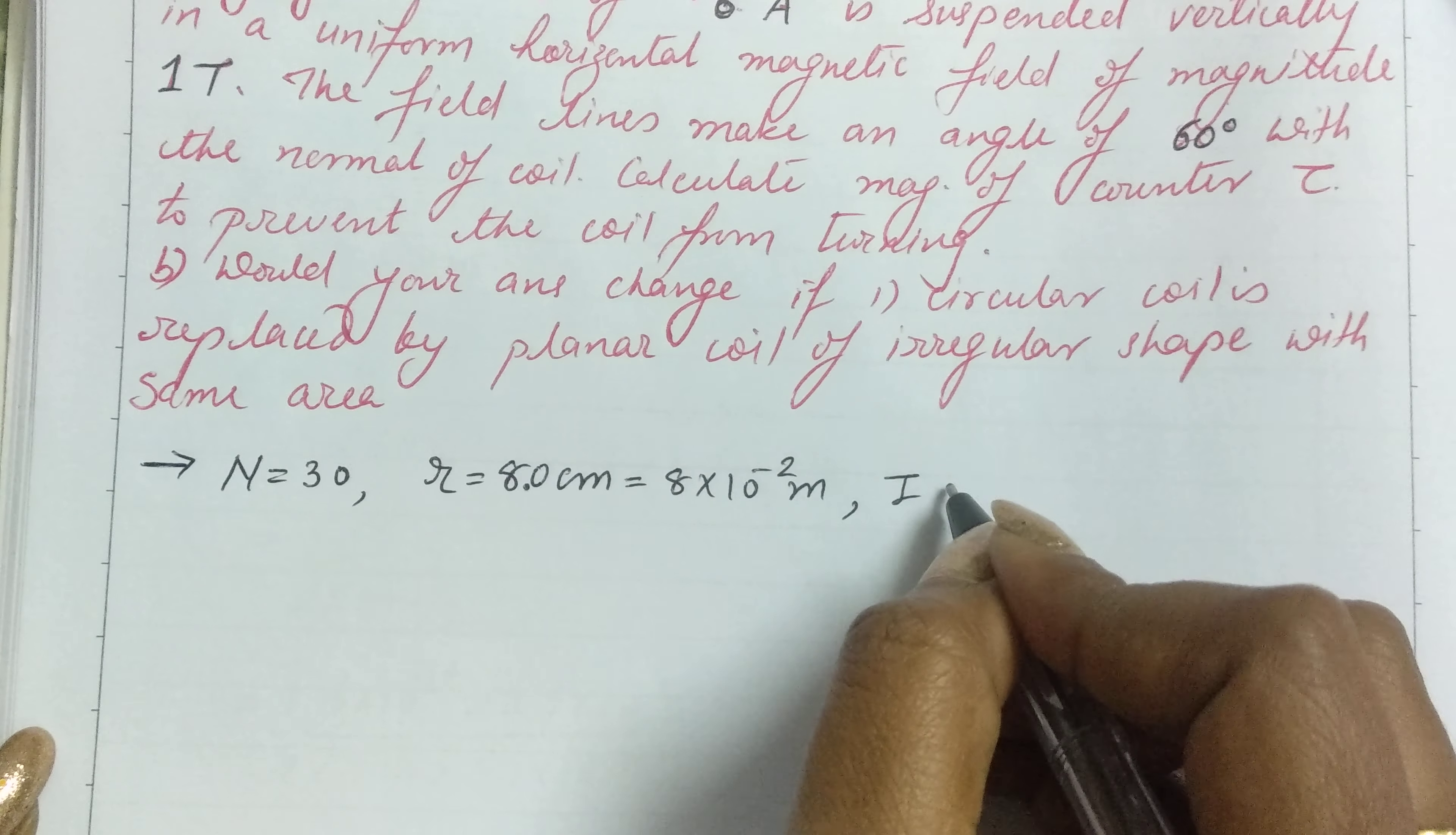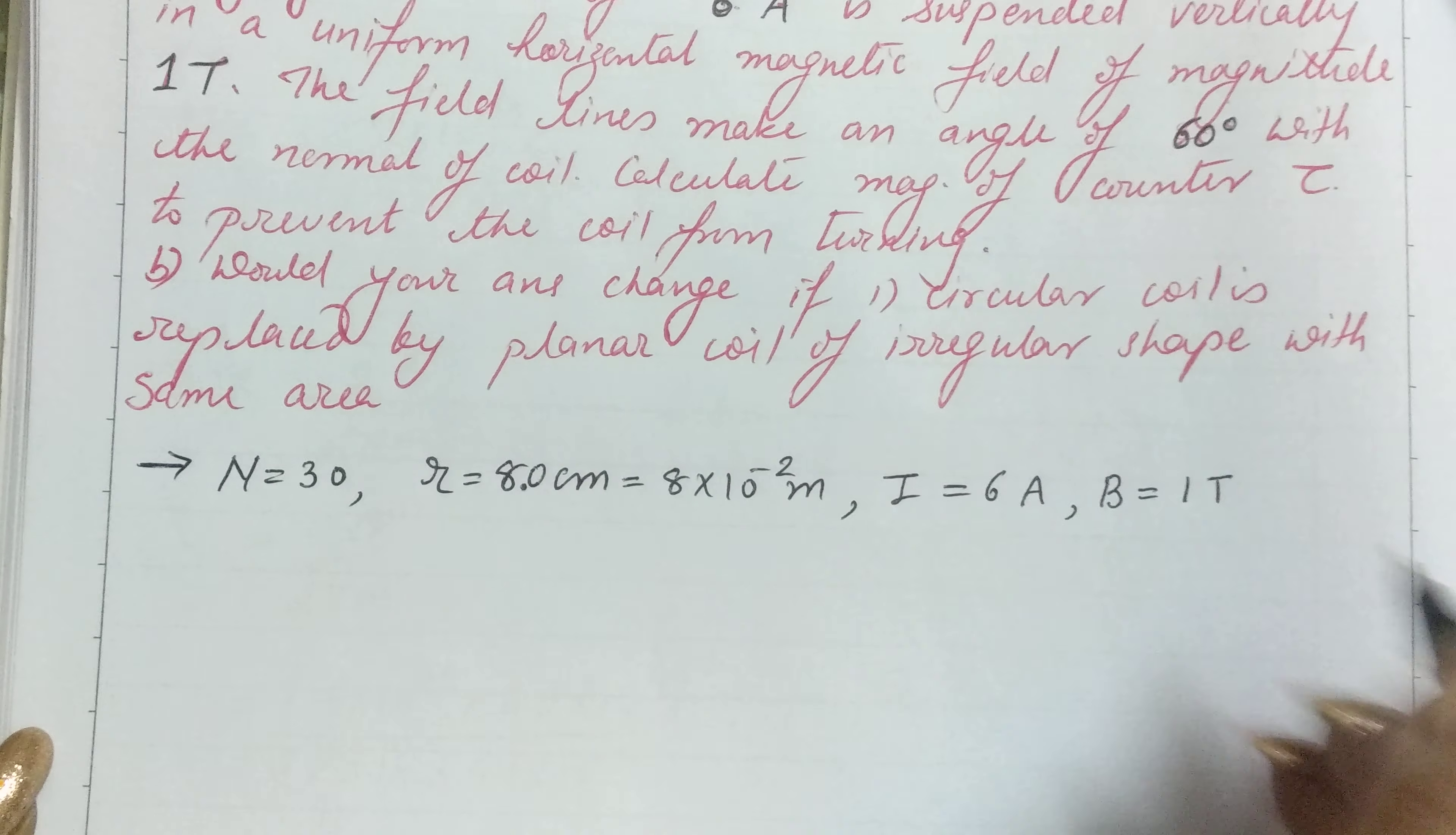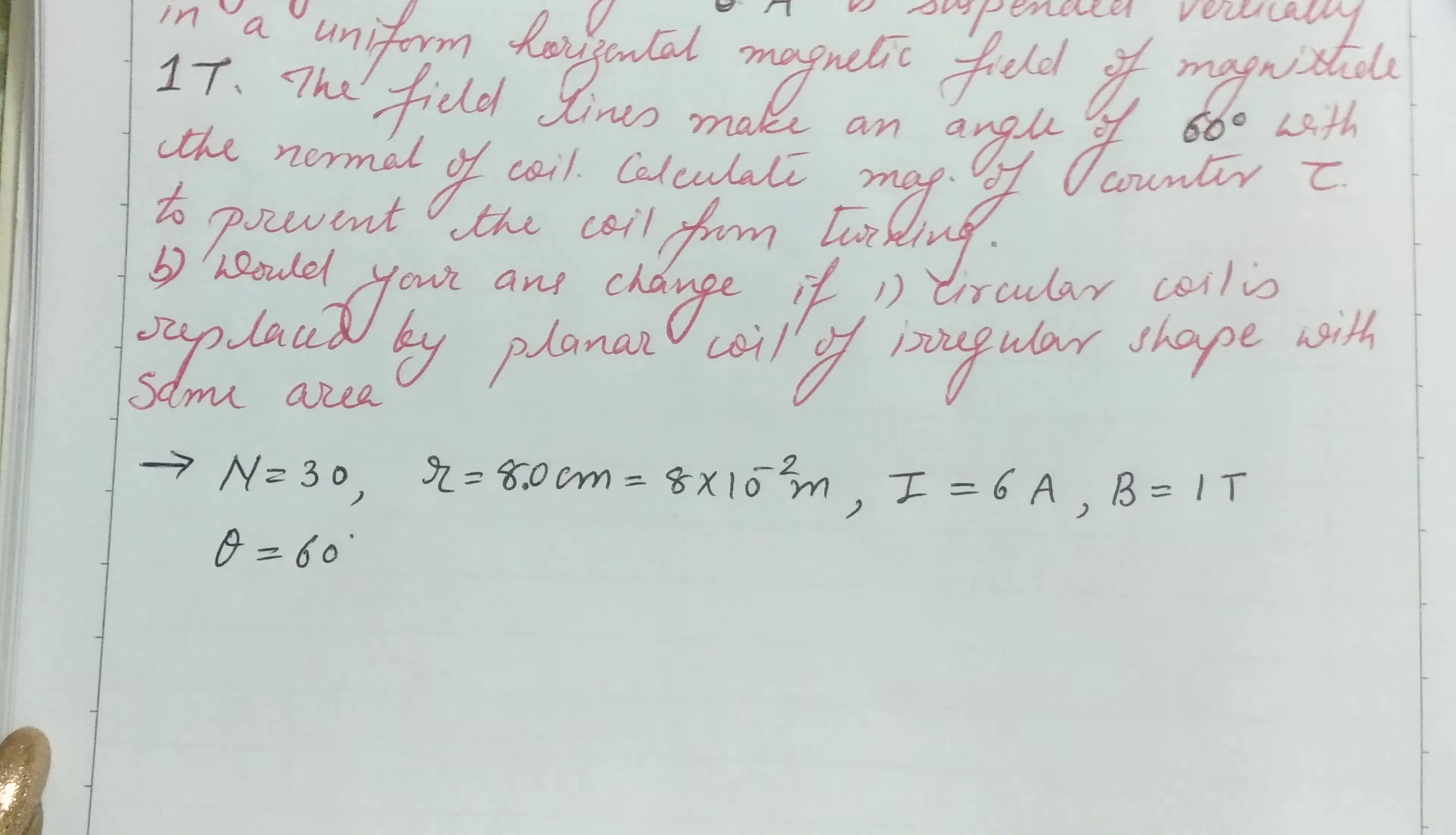The current passing through the coil is 6 amperes. The uniform magnetic field is 1 tesla, and θ, the angle between the normal of the coil and the magnetic field, is 60 degrees.